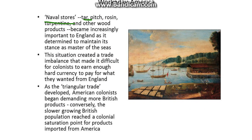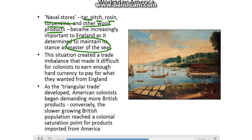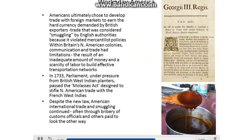Naval stores selling tar, pitch, rosin, turpentine, and other wood products became increasingly important to England as it sought to maintain its stance as Master of the Seas. This created an imbalance, making it difficult for colonists to earn enough hard currency to pay for what they wanted from England. As the triangular trade developed, American colonists began demanding more British products, while the slower-growing British population reached a saturation point for American imports. Americans ultimately chose to develop trade with foreign markets to earn hard currency, trade considered smuggling by English authorities because it violated mercantilist policies.